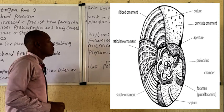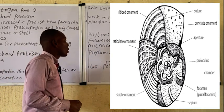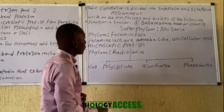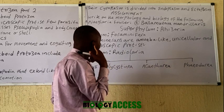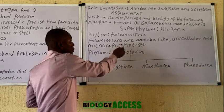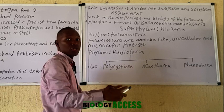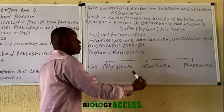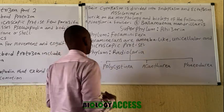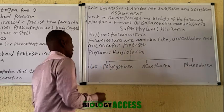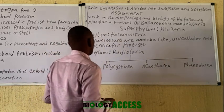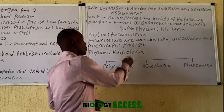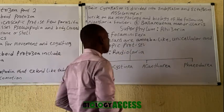The foraminifera also possess pseudopodia, which extend out of the shell in some cases to capture organisms. The nucleus remains within the shell. Other characteristics are displayed on the board.